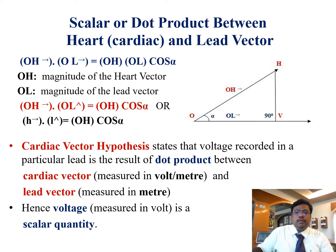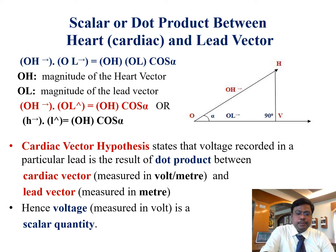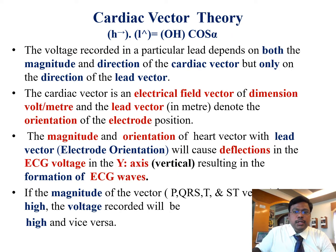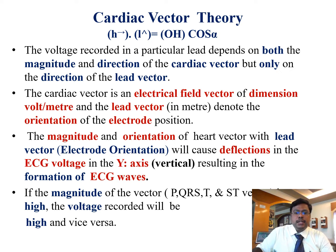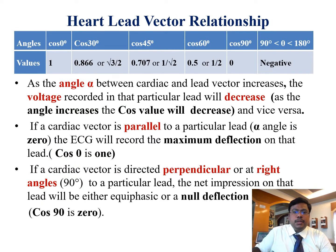The cardiac hypothesis states that what is recorded in a particular lead is a result of the dot product between cardiac vector, measured in volts per meter, and lead vector, measured in meters — hence voltage is a scalar quantity. H dot L equals OH cos alpha. Voltage recorded in a particular lead depends both on the magnitude and direction of the cardiac vector, but only on the direction of the lead vector. The cardiac vector is an electrical field vector dimensioned in volts per meter, and the lead vector in meters denotes the orientation of the electrode position. If the magnitude of vectors P, QRS, T, and ST are high, the voltage recorded will also be high.